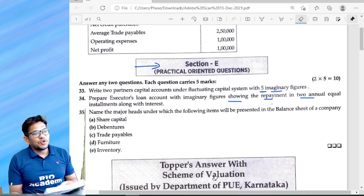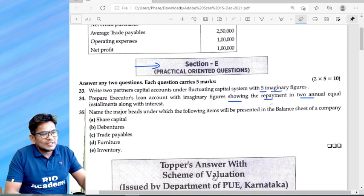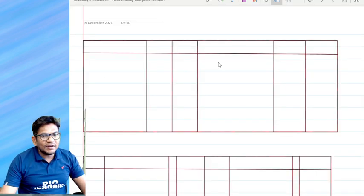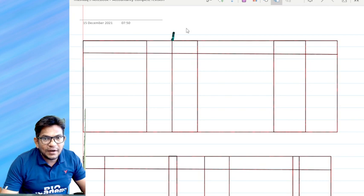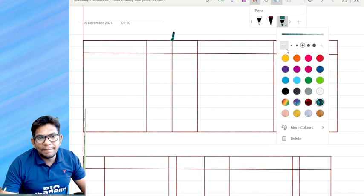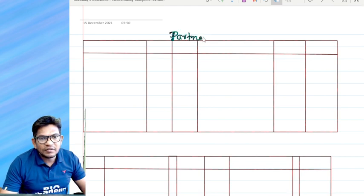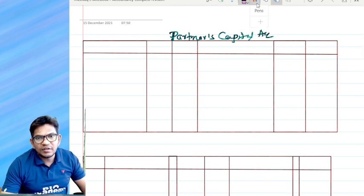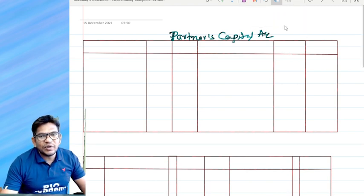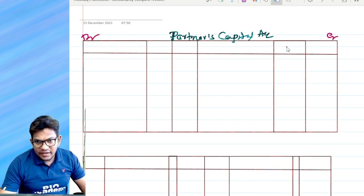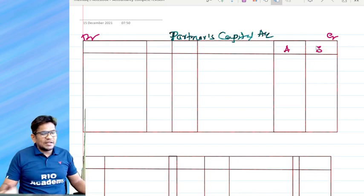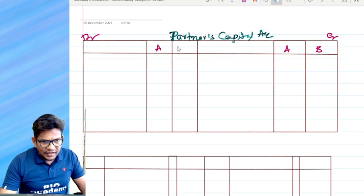We can take imaginary figures. Fluctuating means partners capital account. We'll prepare partners capital account. This is your debit side, always debit side and credit side. We assume, you can name it anything, but in the books they mention A and B. I have taken A and B, you can also take A and B. I don't have any issues. You can get full marks for this.